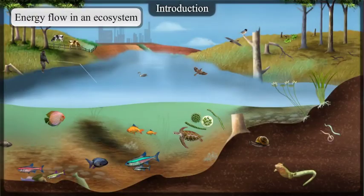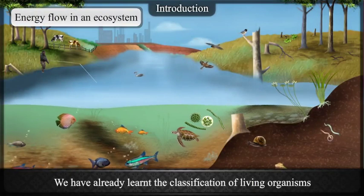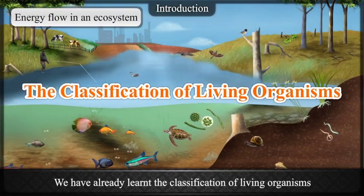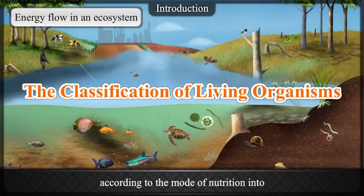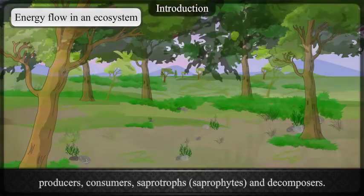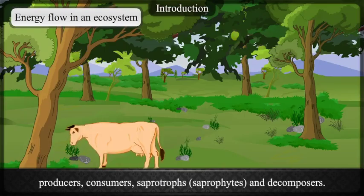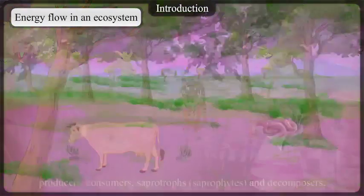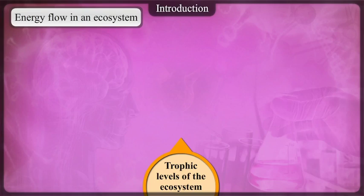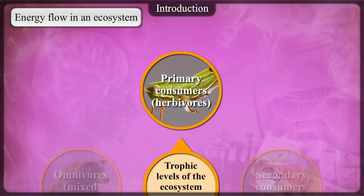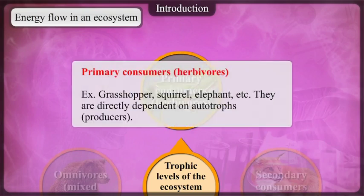Energy Flow in an Ecosystem. We have already learnt the classification of living organisms according to the mode of nutrition into producers, consumers, saprotrophs and decomposers. Consider the various trophic levels of the ecosystem around you. Primary consumers are herbivores — e.g. grasshopper, squirrel, elephant, etc. They are directly dependent on autotrophs, i.e. producers.